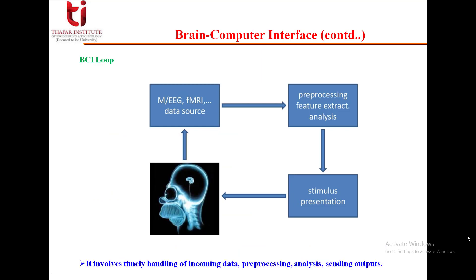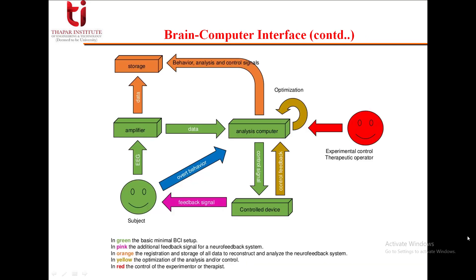The BCI loop involves timely handling of incoming data, preprocessing, analysis, and then finally sending the outputs. This more detailed diagram shows the brain-computer interface. The blocks or arrows in green represent the basic minimal components that are required in the BCI setup.